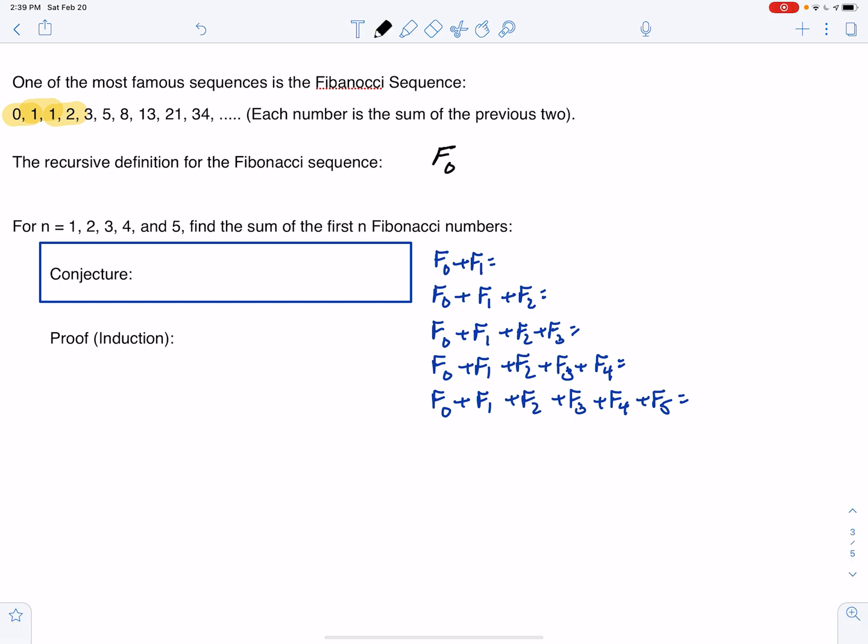So a recursive definition for this sequence is, we'll call it F for Fibonacci. F0 is 0, F1 is 1, and Fn is equal to Fn minus 1 plus Fn minus 2.